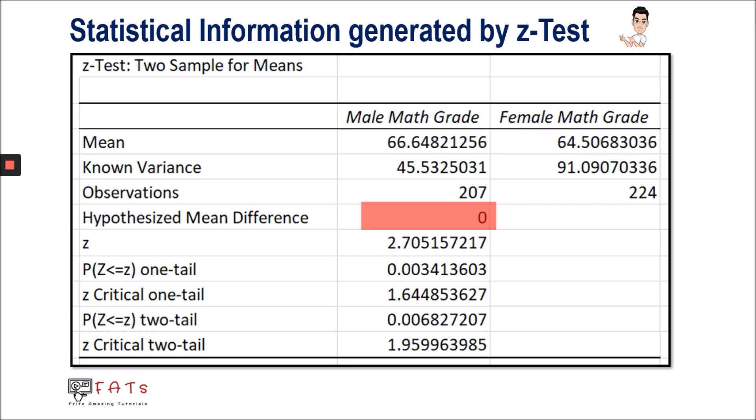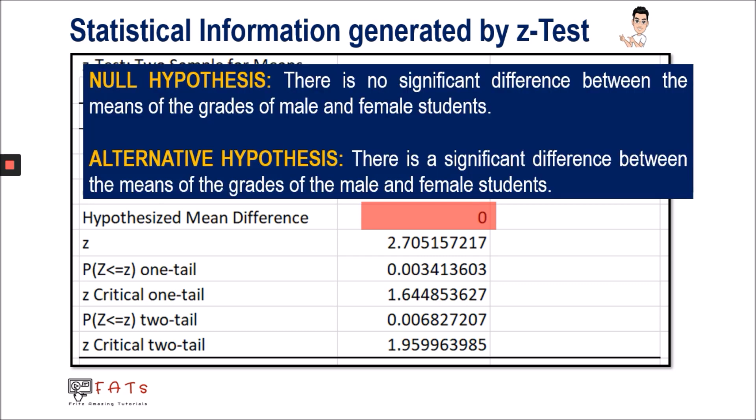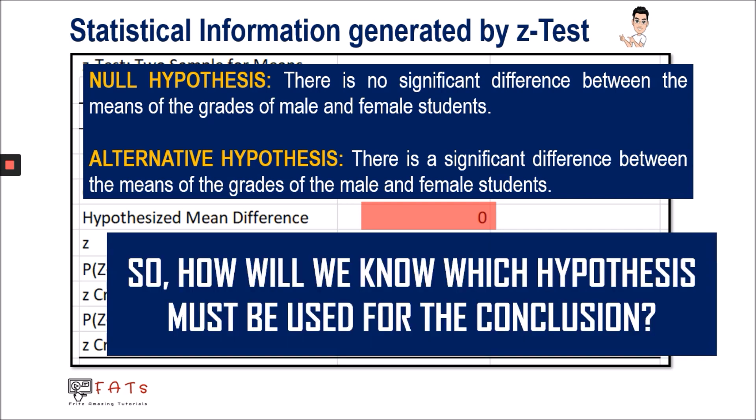The next information from this table is the hypothesized mean difference, which is equal to zero. This refers to the two hypotheses: the null hypothesis, which states there is no significant difference between the means of the grades of male and female students, and the alternative hypothesis, which states that there is a significant difference between the means of the grades of the two groups.